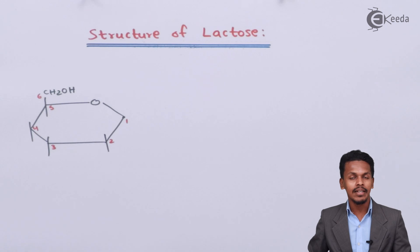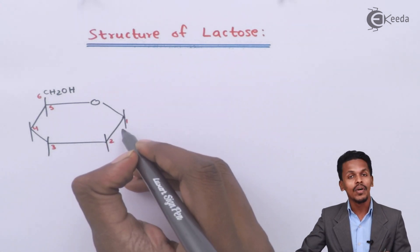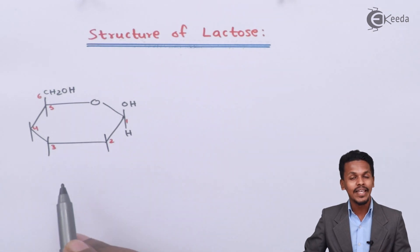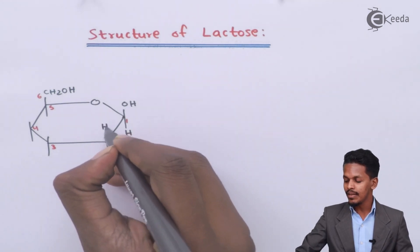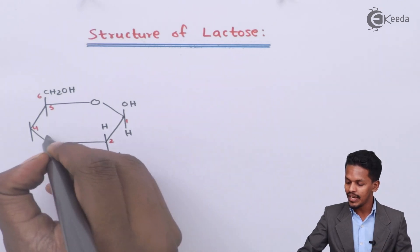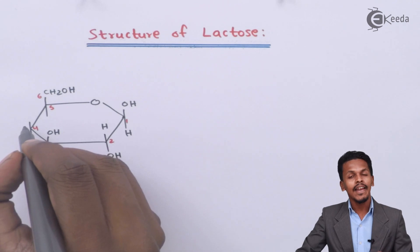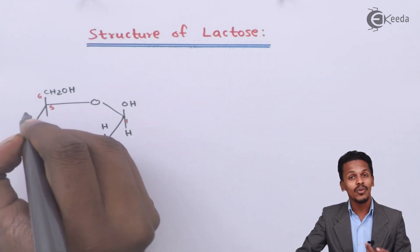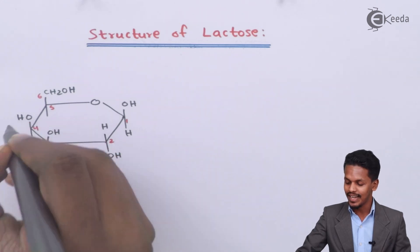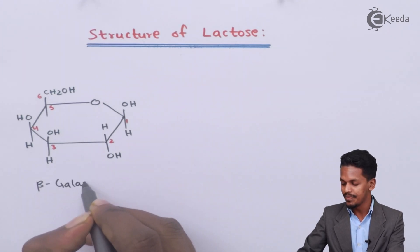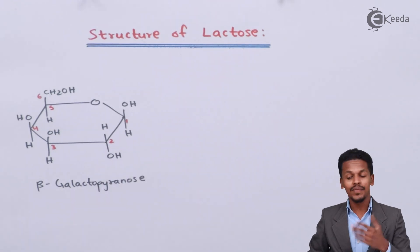When drawing the structure of beta-glucopyranose, there is a presence of OH on the upper side. But here we are drawing beta-galactopyranose. The position of hydrogen and OH for carbon number two will be the same as beta-glucopyranose. For carbon number three it is also the same, but the difference is that in beta-glucopyranose the OH is on the lower side for the fourth carbon atom, whereas in galactopyranose there will be OH on the upper side and H on the lower side. This is beta-D-galactopyranose.